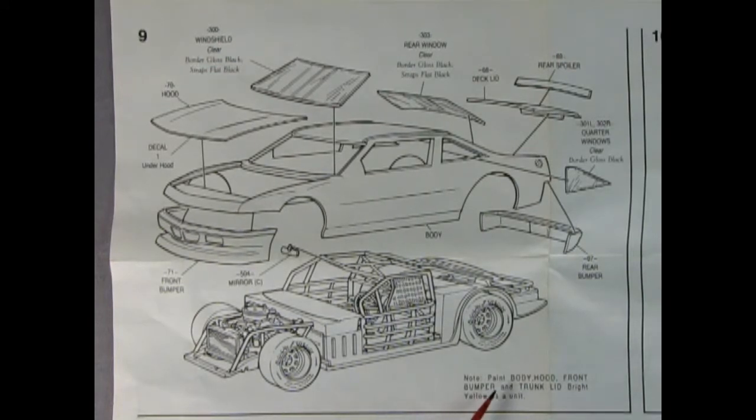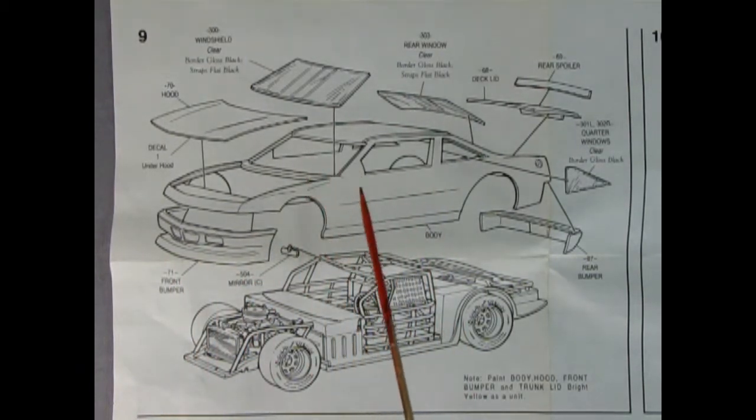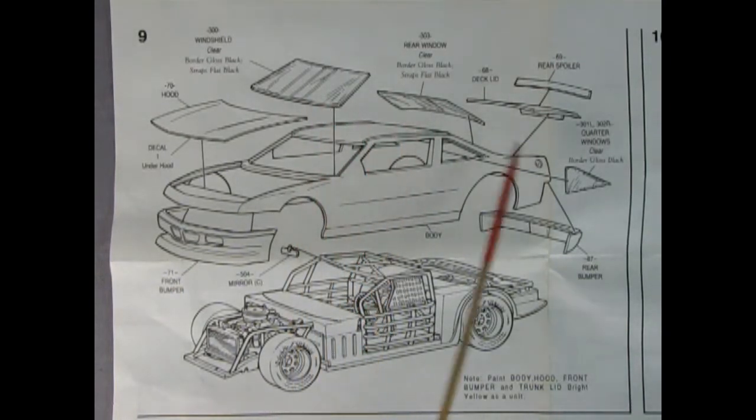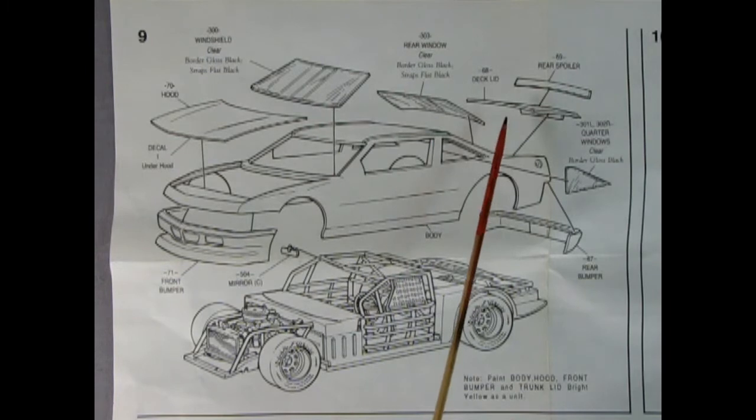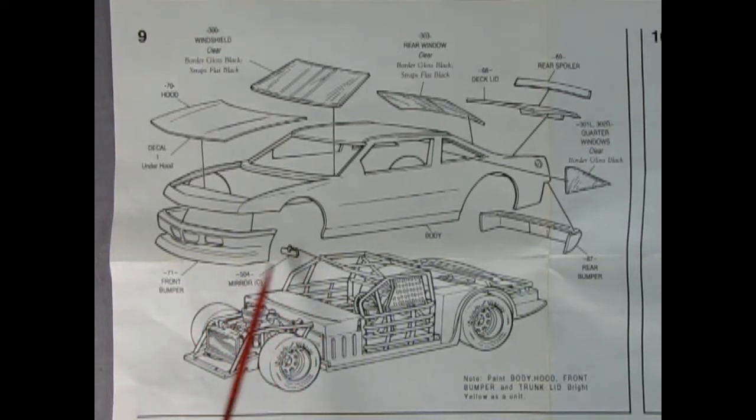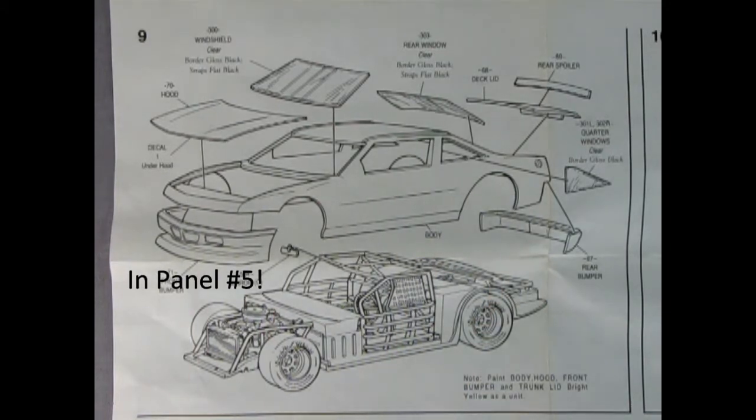Panel 9 is where the body meets the chassis. It says note paint trunk, hood, front bumper and trunk lid bright yellow as a unit. I like to kind of keep them separate. But you know you got to keep them separated right. So there's our windshield, our rear window, side windows. There's our deck lid, our rear spoiler, our rear bumper, our front bumper, the body, and the rear view mirror again. I thought we already put that in. Well at any rate there it all is. And that's how it's gonna look.